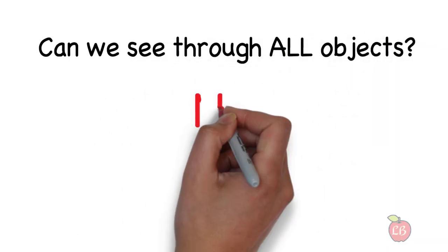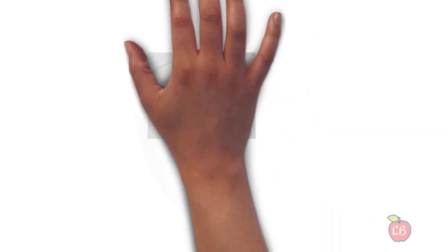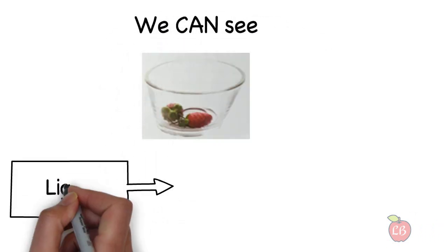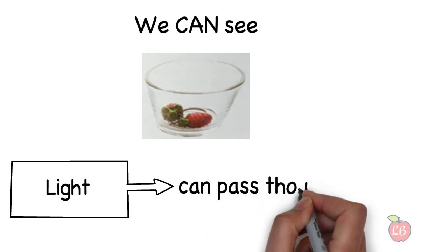Now, can we see through all objects? Well, the answer is no. It will depend on the material. Can we see the strawberries? Yes, we can see because light can pass through glass.